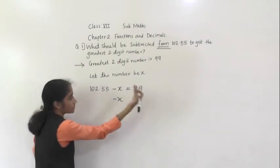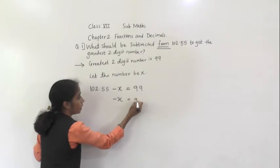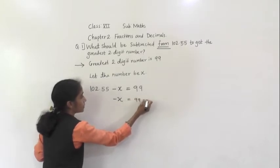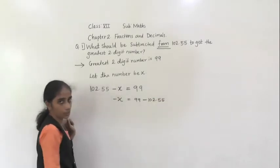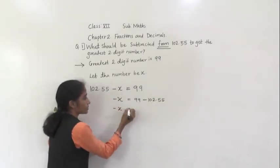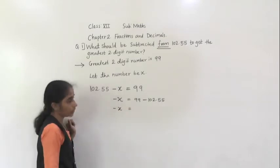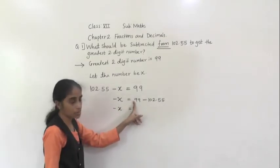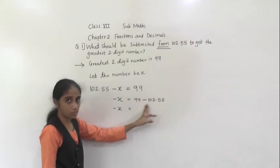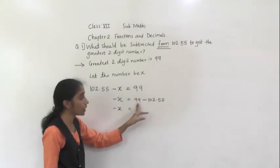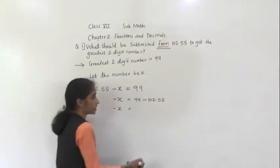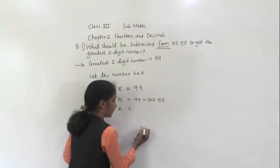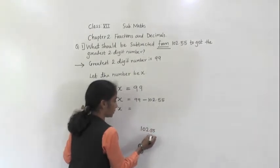Now, minus X is equal to... This number is plus and this is minus — plus minus minus. So subtract 99 from 102. From 102 we have to subtract 99. 99 subtract. 99 is a whole number, so after that we give the decimal point.